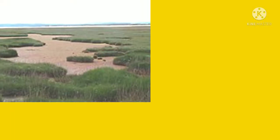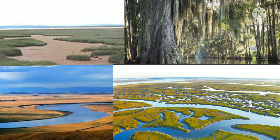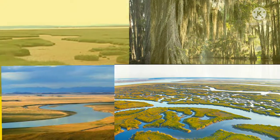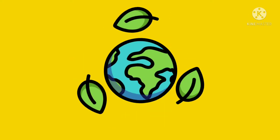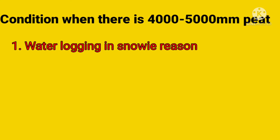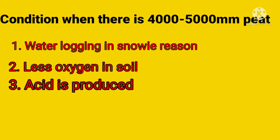Peat is found in many types of wetlands. Few of them are marshes, swamp, flood plains, and coastal wetlands. After the peat formation reaches 3000 to 4000 mm, a different kind of ecosystem starts forming. In places where snowfall and water flow happen, water logging may occur, and the soil will contain a reduced level of oxygen. Acid is also produced in that particular place.